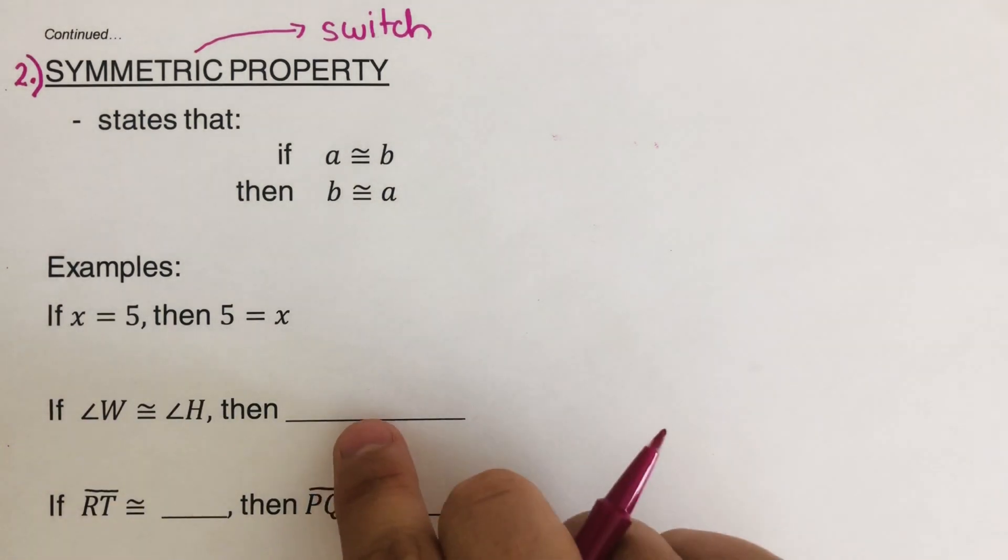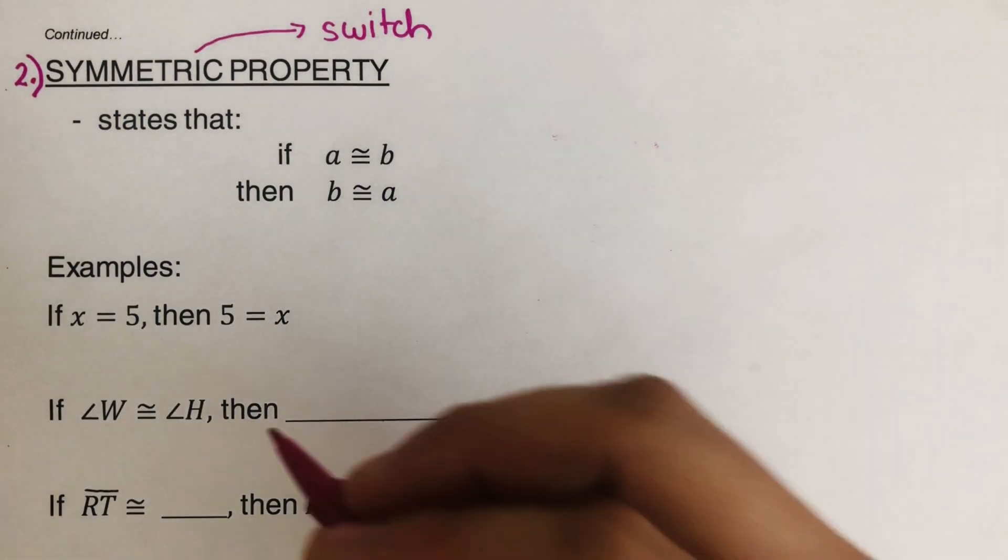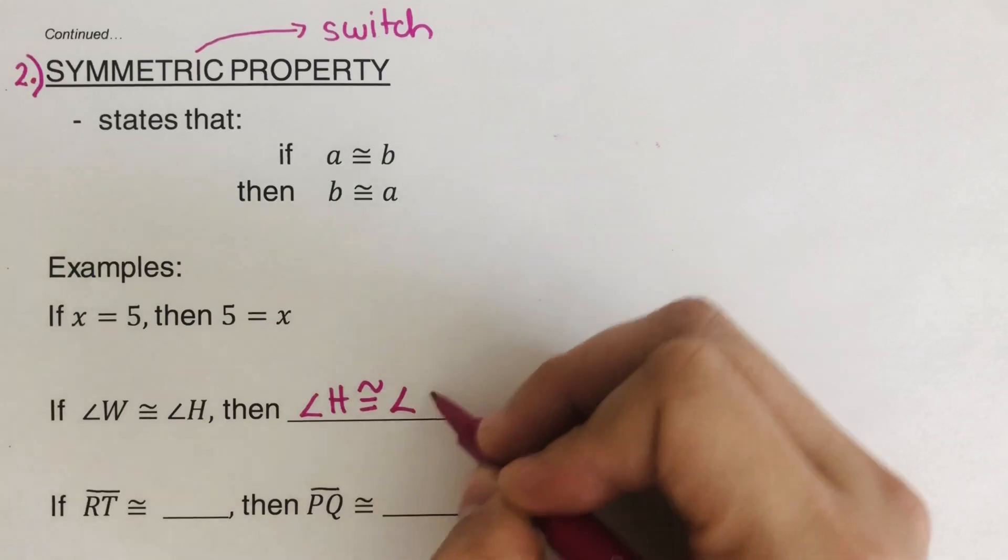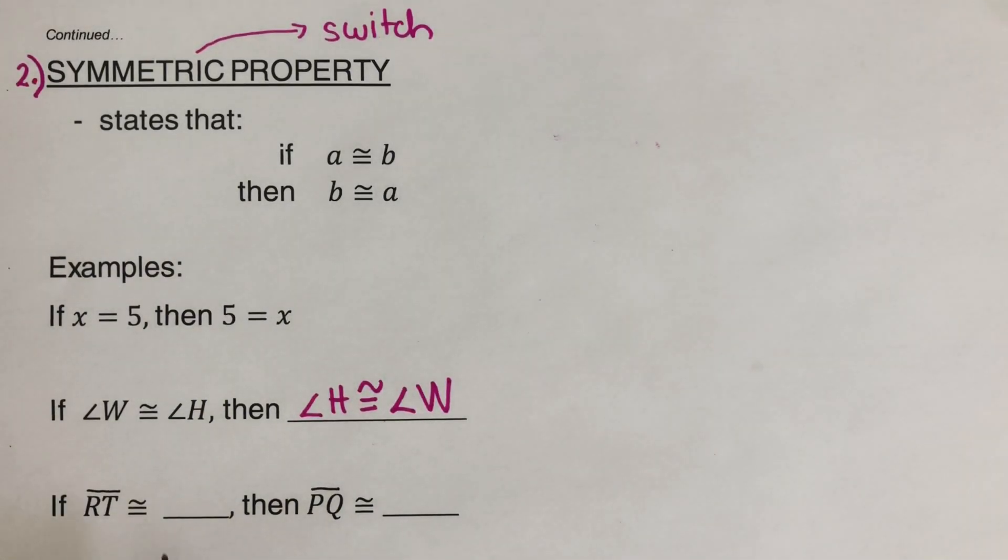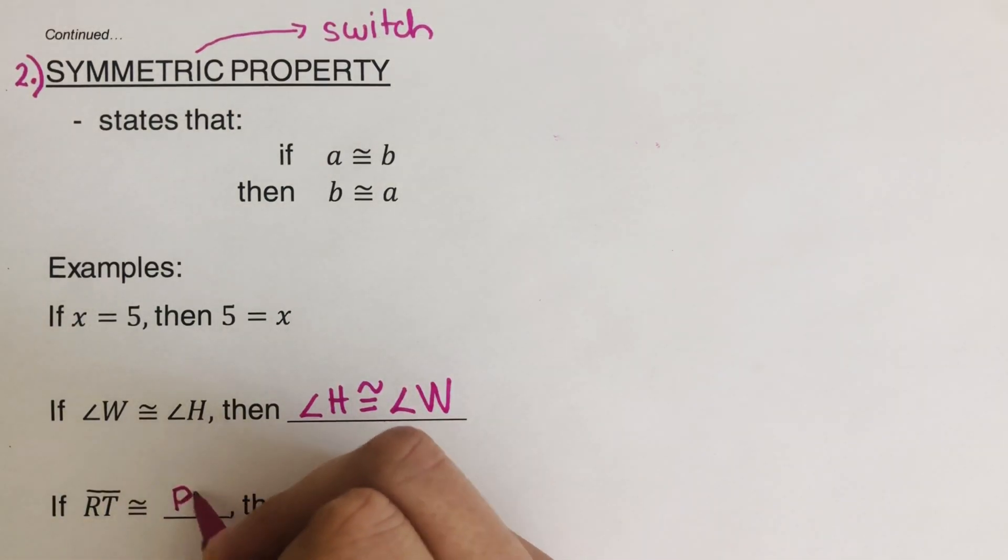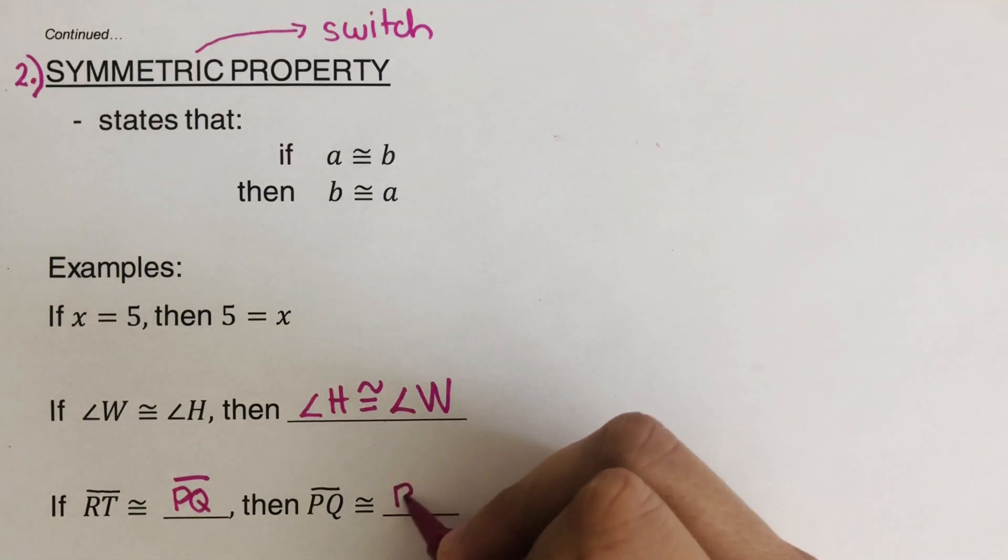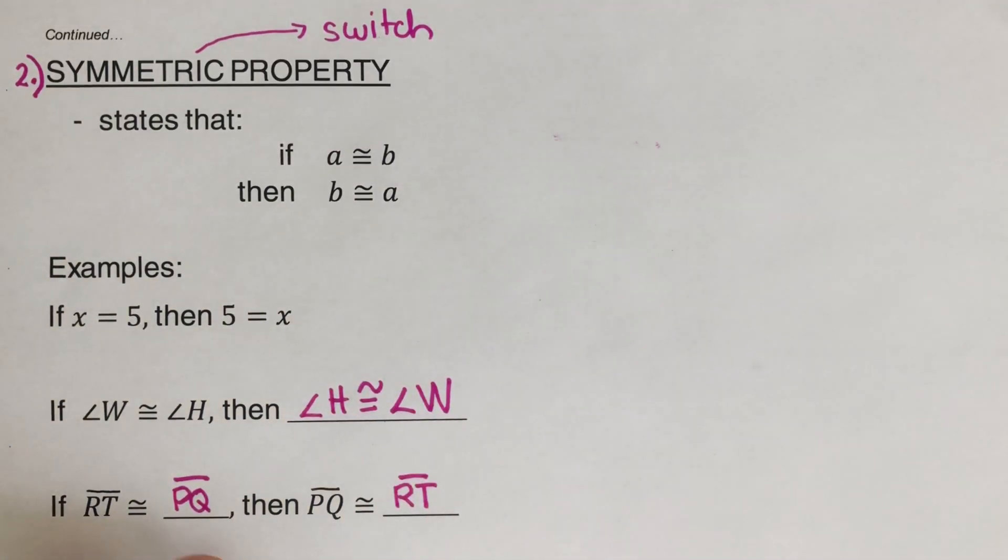Okay, what did you have for this one right here? Good. Angle H is congruent to angle W. Good. What about the next one right here? RT is congruent to blank, then PQ is congruent to blank. So this one right here should be PQ. Okay? So if I switch around, PQ is equal to RT. So I just switched it around. So RT is equal to PQ. PQ is equal to RT. Now let's have the third one.